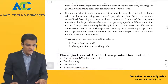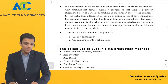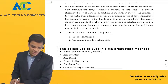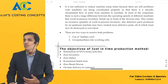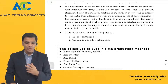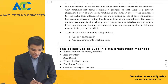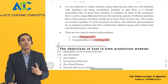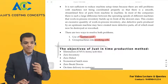It is not sufficient to reduce machine setup times alone, because machines may still not be coordinated properly for a smooth, streamlined flow of parts from machine to machine. There are two ways to resolve both problems in just-in-time: the kanban card system and the working cell system. These are two important approaches that just-in-time follows.